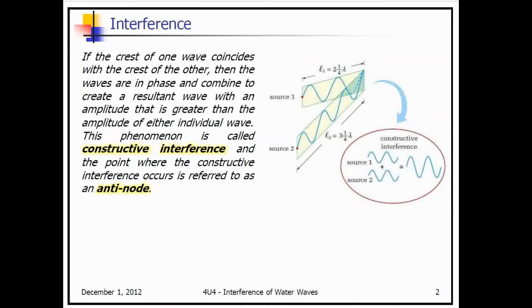Anytime the two waves are adding together and making something greater, it's constructive interference. And at the point where we have that constructive interference — the super crest — we call it an anti-node.